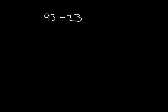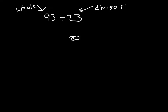Let's start with the problem 93 divided by 23. 93 is our whole, and 23 is our divisor. Our estimate for this: 23 is close to 20, and if we're dividing by 20, our estimate would be about 80. 80 divided by 20 is 4, so our estimated quotient here is 4.